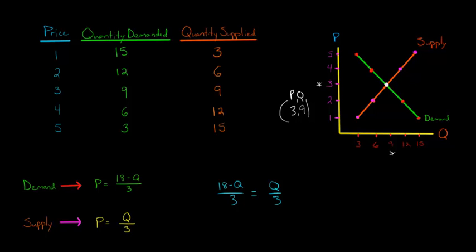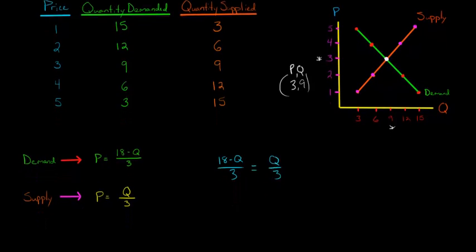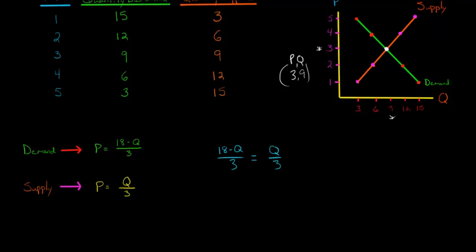So what we can do is there's a number of ways you could solve this, but let's multiply each side by 3. So if we multiply this side of the equation by 3, 3 times Q over 3 is going to give us Q. And if we multiply this side of the equation by 3, then that's going to have 3 times 18 minus Q over 3. Now what's going to happen? This 3 will cancel out. The 3 in the numerator and 3 in the denominator and that leaves us with 18 minus Q equal to Q.